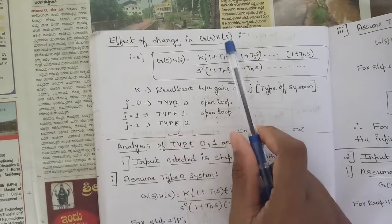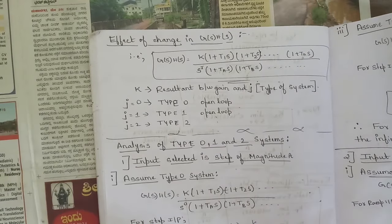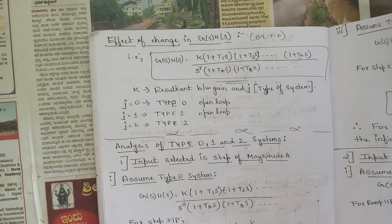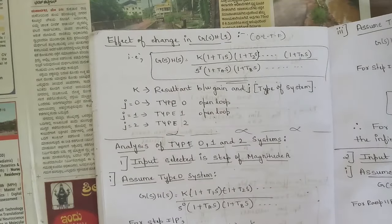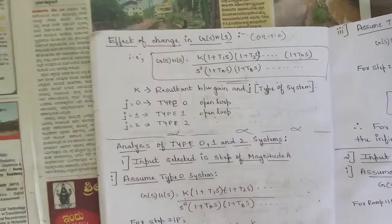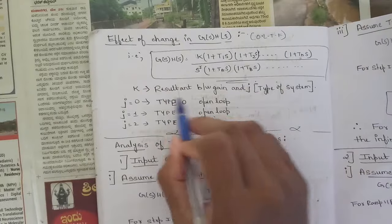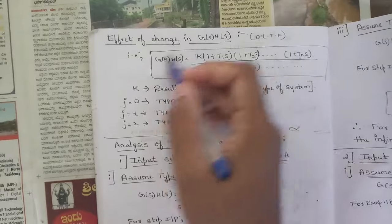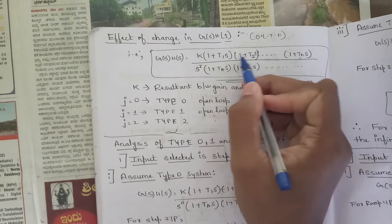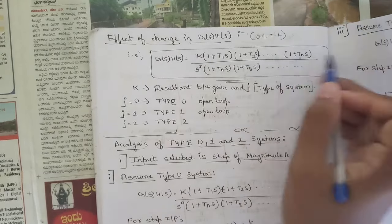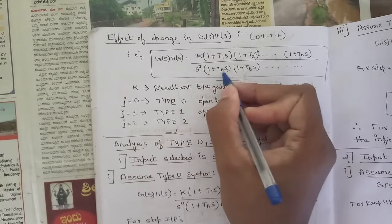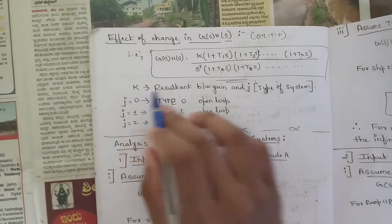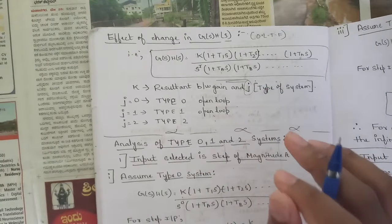We will continue with the concept of the effect of change in G(s)H(s), which is the open loop transfer function (OLTF). In general, G(s)H(s) is represented in the form: k times the product of (1 + T1·s)(1 + T2·s)...(1 + Tn·s) divided by s to the power j times (1 + Ta·s)(1 + Tb·s)..., where k is a resultant constant between gain and j, and j is called the type of system.